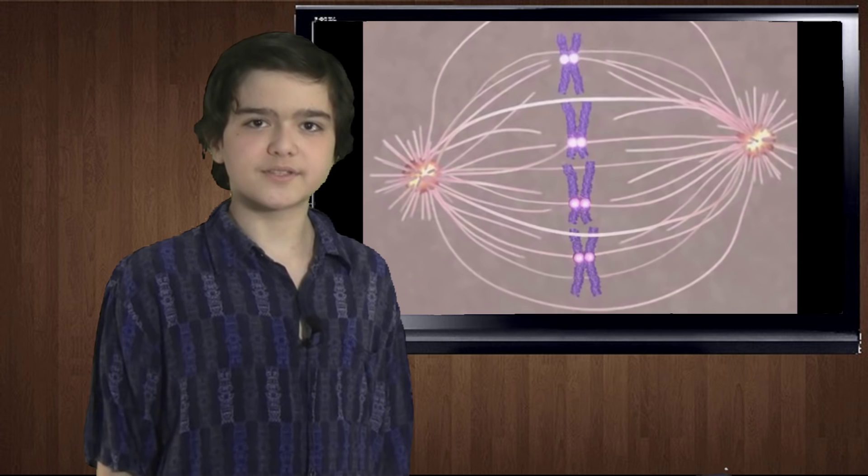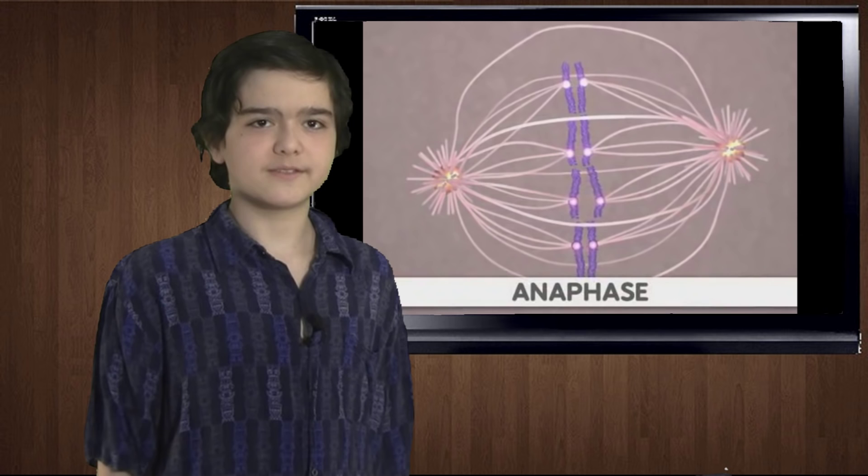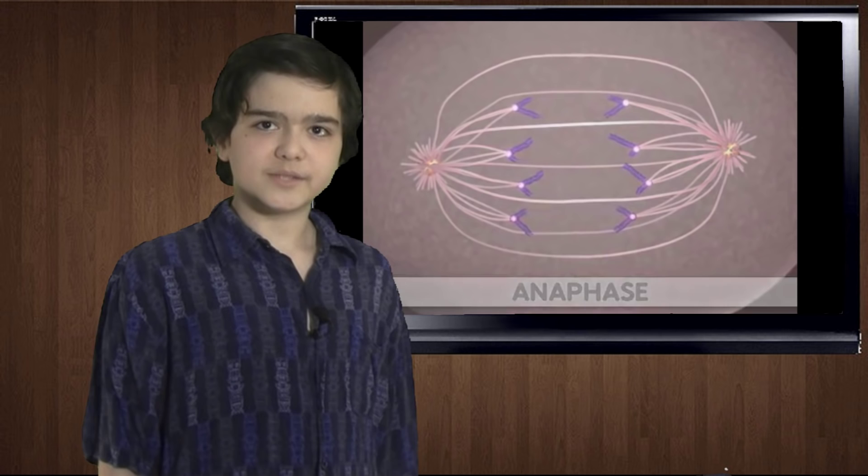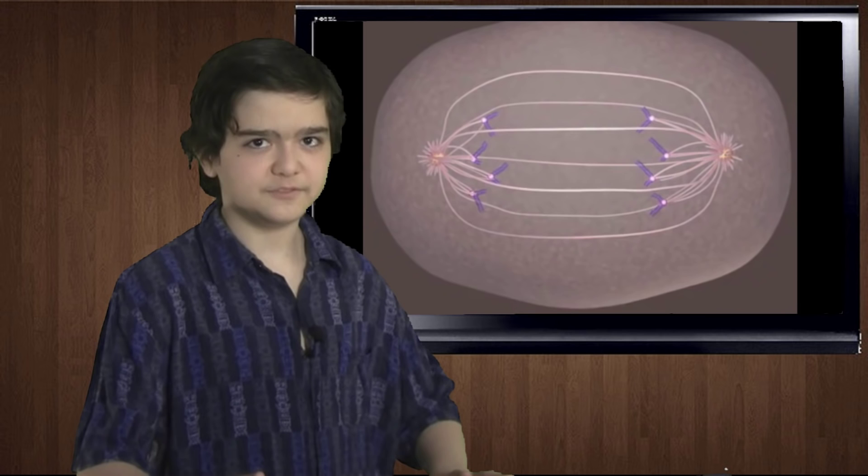Then the anaphase begins. The anaphase is when the mitotic spindle separates the chromatids. These sister chromatids, now separated, go to opposite sides of the cell. Then the final stage initiates — the telophase.